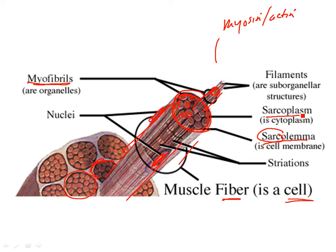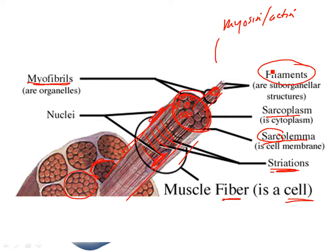Another term is sarcoplasm — that's just the cytoplasm of a muscle cell. You'll also notice it looks striped, with different colored layers; that's what forms the striations. These myosin and actin filaments are arranged in regular, repeating bands, and that's what gives skeletal muscle its striped appearance.